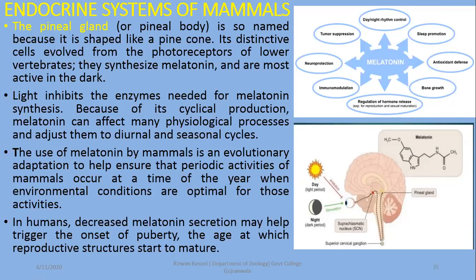To regulate reproductive activities and the estrous cycle, mammals usually detect the duration of day and night length. Melatonin rhythms help regulate them by the detection of day and night duration. In humans, decreased melatonin secretion may help trigger the onset of puberty — the age at which reproductive structures start to mature, when gametogenesis starts and gametes are produced.